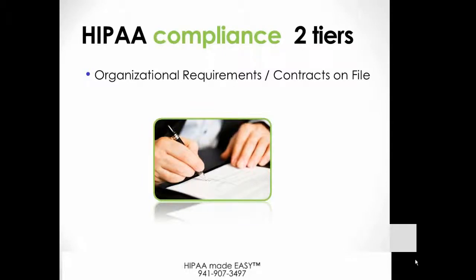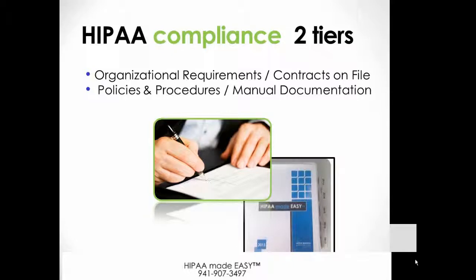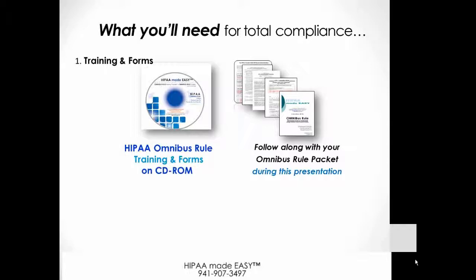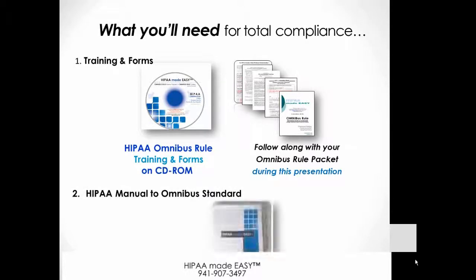First, we'll be organizing your requirements — we help you do that by providing all the contracts that you'll need in electronic file format so you can keep them on file. Second, by implementing policies and procedures in your office and keeping them documented in a HIPAA manual. We provide the training and forms on a very handy CD-ROM. You can watch the training over and over and access your forms from our CD-ROM. You'll be able to view, manipulate, and customize all of the forms you'll need for the new HIPAA Omnibus Rule. We also suggest housing all of these documents in a new HIPAA manual that's up to Omnibus standards. If you ever have an inspection, this is the first thing that a HIPAA inspector is going to look for.